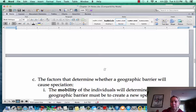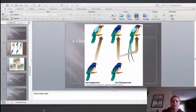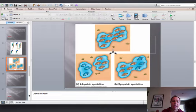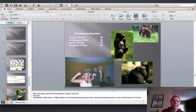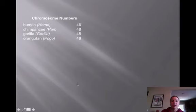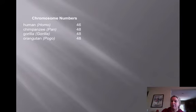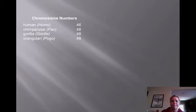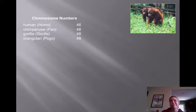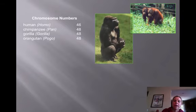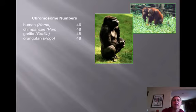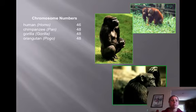Speciation also has to do with chromosome number. Humans have 46 chromosomes, while chimpanzees, gorillas, and orangutans have 48. There's a lot of question about how we went from 48 to 46, because according to the fossil record they were here first and we evolved from them. As far as the order of evolution among primates, you've got the very primitive orangutans, followed by the gorilla which is a bit more advanced, and then the chimpanzee which is the most similar to us.